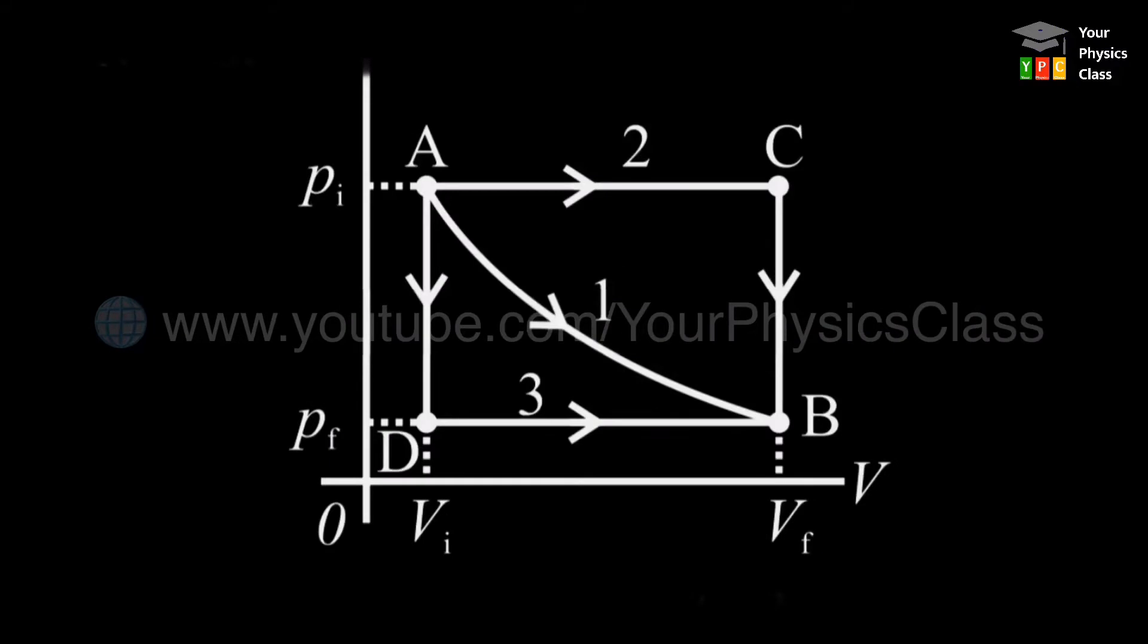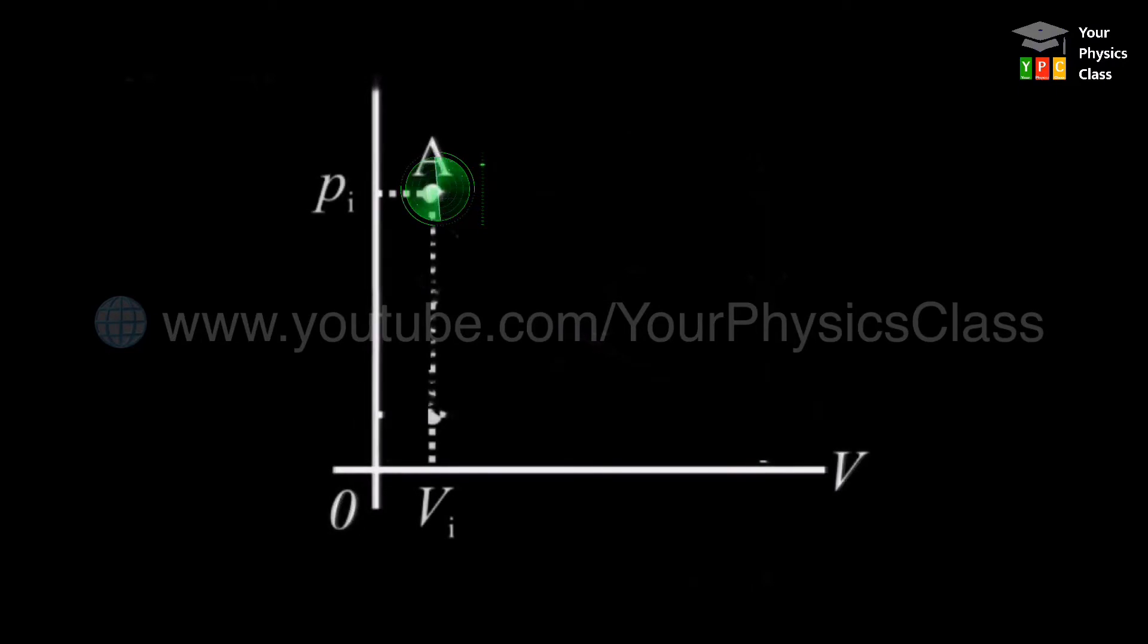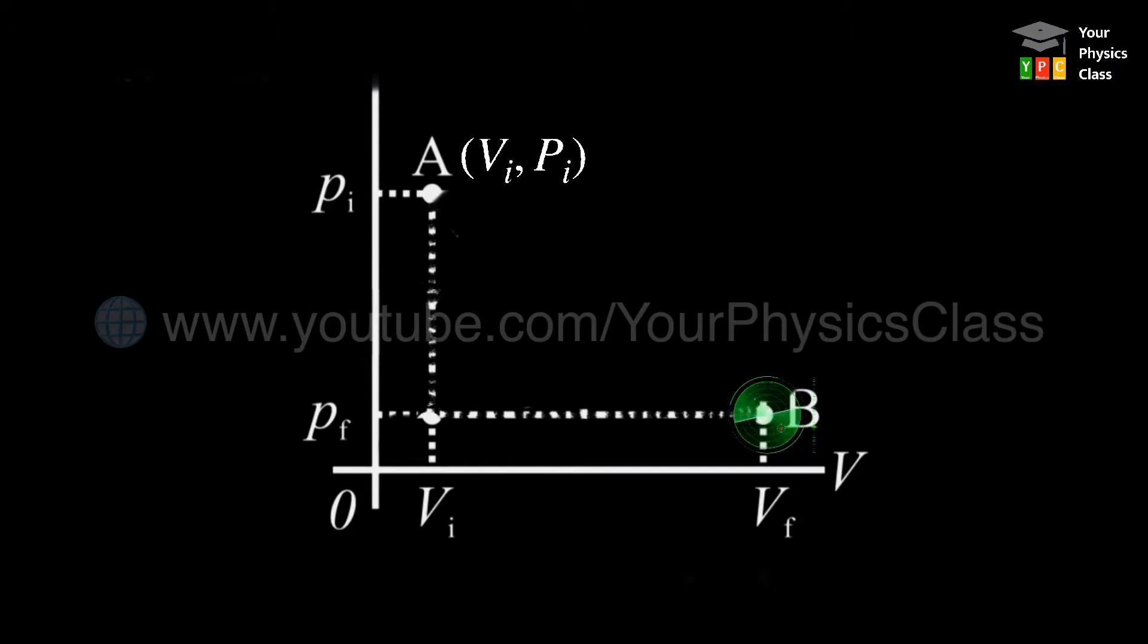The figure describes different ways in which we can change the state of the system. The system is initially at state A with pressure PI and volume VI. We say that the state is indicated by the coordinates VI, PI. The final state of the system is shown by the point B with its coordinates VF, PF.